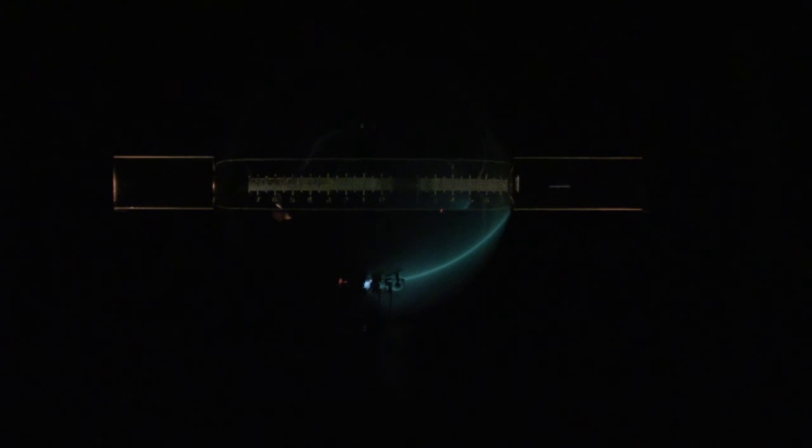I'm going to begin to turn up the current to the Helmholtz coil so I can increase the magnetic field. What you can begin to see is that the beam of electrons is curving. The Lorentz force is in place here.